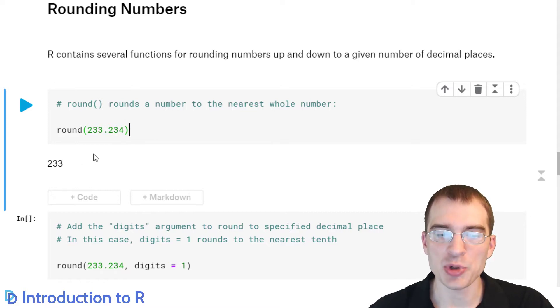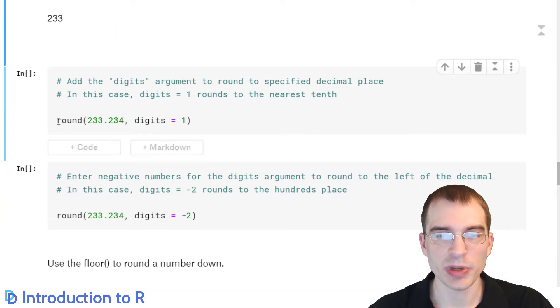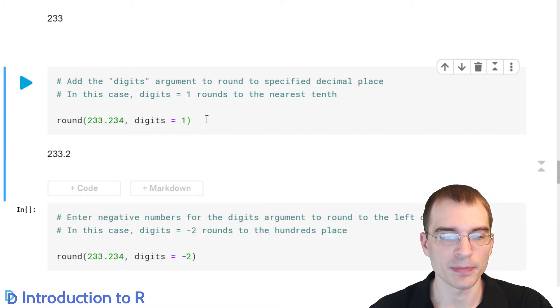You can also add an optional argument to round. In this case, we're passing in two different arguments. The first one to round is the actual number we're operating on, and we have this second argument here, digits equals 1. So we're telling the function, not only do we want to round this, but we want to round to the first decimal place. So instead of rounding to the whole number, we're actually going to round to the tenths place. So the result of this should be 233.2. There we go.